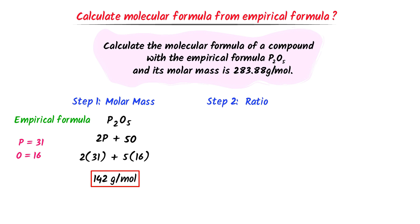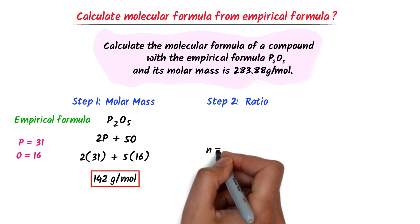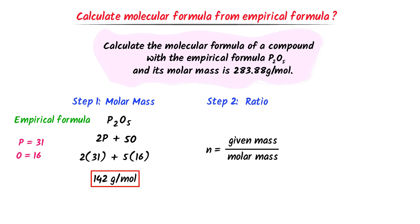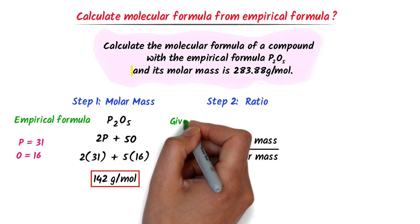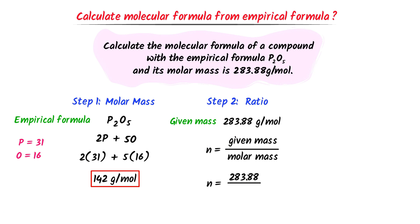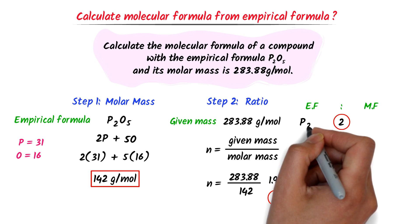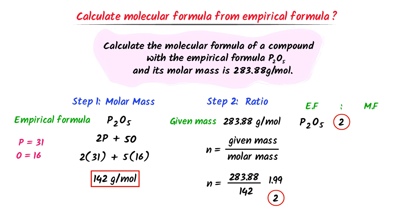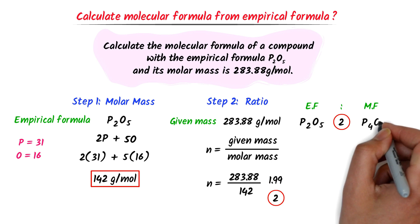Secondly, I find the ratio. To do so, I write N equals given mass divided by molar mass of empirical formula. The given mass is 283.88 and the molar mass of empirical formula is 142 gram per mole. After calculation, I get 1.99, which is approximately equal to 2. So the ratio between empirical formula and molecular formula is 2. I write empirical formula P2O5 and multiply its whole numbers by 2. I get P4O10.